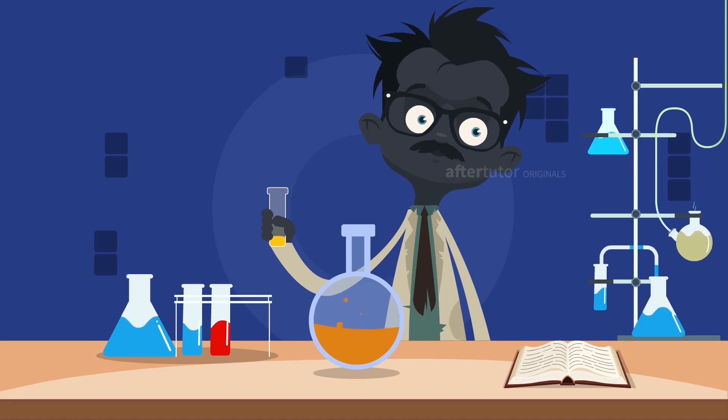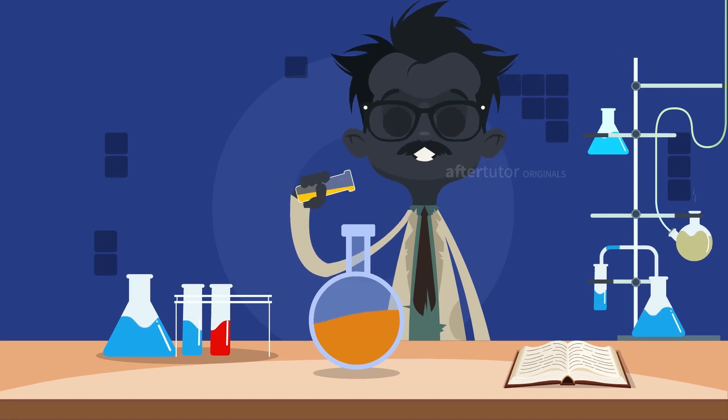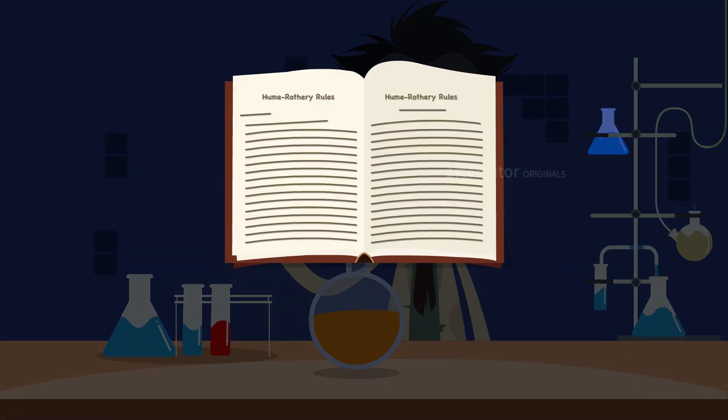So to know which elements could dissolve in a metal, a set of rules to be followed, known as Hume-Rothery rules.